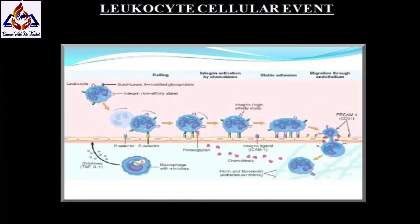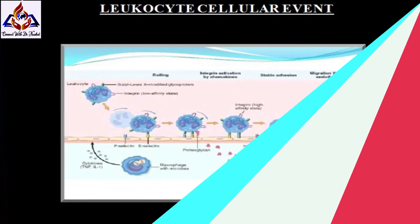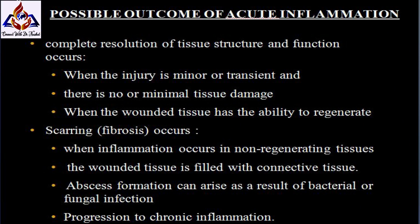Chemotaxis and activation: leukocytes follow a chemical gradient to the site of injury — this process is called chemotaxis. In this picture you can see the leukocyte cellular events. Possible outcomes of acute inflammation include complete resolution of tissue structure and function, which occurs when the injury is minor or transient and there is no or minimal tissue damage.